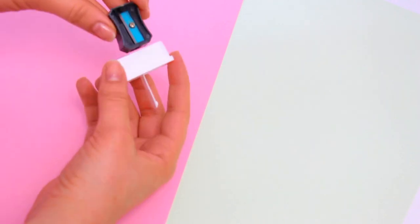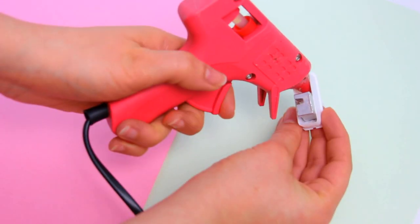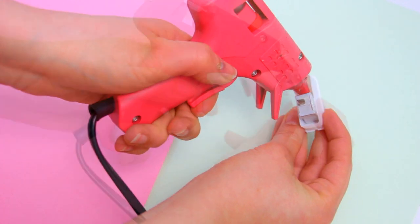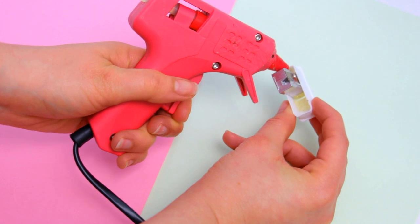For example, this one is too big. And once you decided which one you want, secure it in place with some hot glue or any strong glue you have.